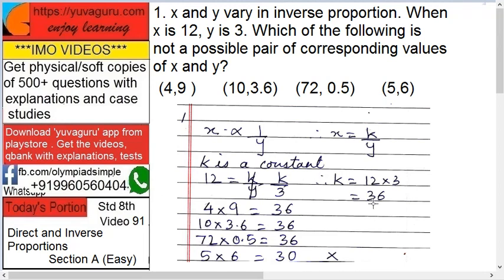Now you know x equals to 36 upon y. Now check all the values. You can directly take this as x into y equals to 36. xy equals to k. This y, if you take it on this side, it will be xy equals to k. In inverse proportion, always take this denominator on the other side. xy equals to k.